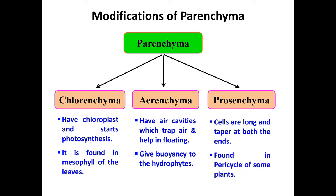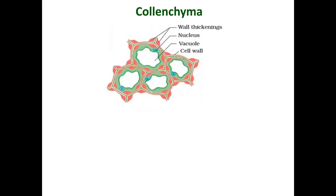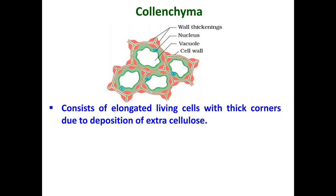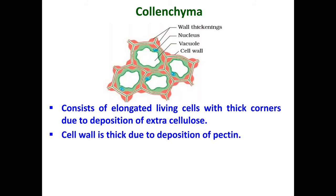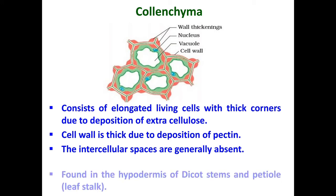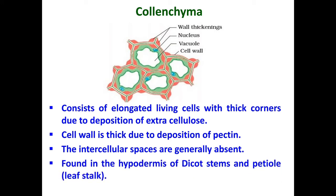Collenchyma is the living mechanical tissue consisting of elongated cells. From the diagram you can see that these elongated collenchyma cells have thick corners due to the deposition of extra cellulose. The cell wall of collenchyma cells is thick due to the deposition of pectin, and they do not have intercellular spaces. Collenchyma tissue is found in the hypodermis of dicot stems and petioles, and is absent in monocot stems, roots, and leaves.